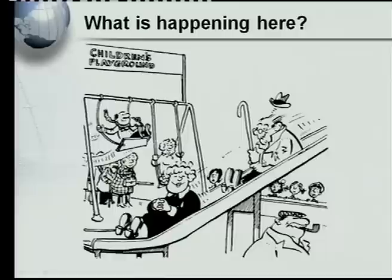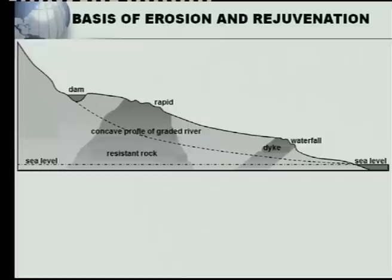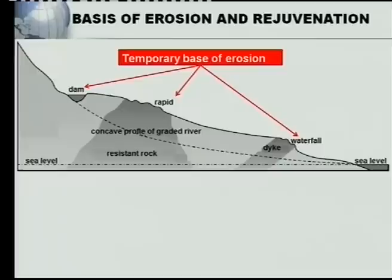Now let's look at a diagram showing older people on swings while younger people stand outside — those older people are acting younger than their age; they have rejuvenated. This can happen to rivers too. Now let's look at bases of erosion and rejuvenation. There are three temporary bases of erosion: a dam, a rapid, and a waterfall. These are temporary because they will eventually be eroded away. The permanent base of erosion is sea level.